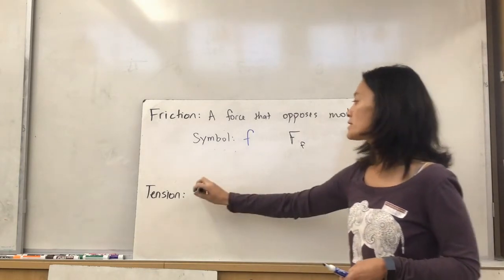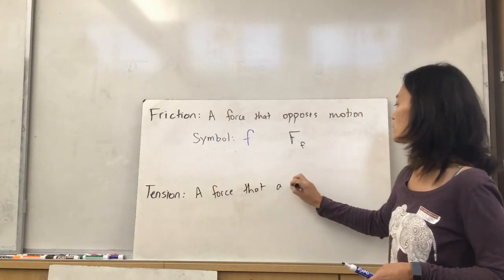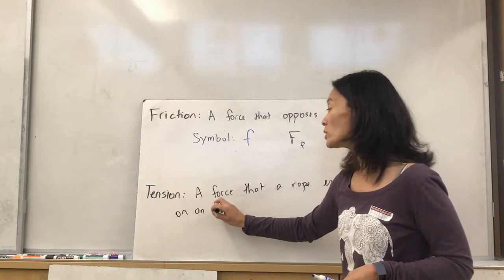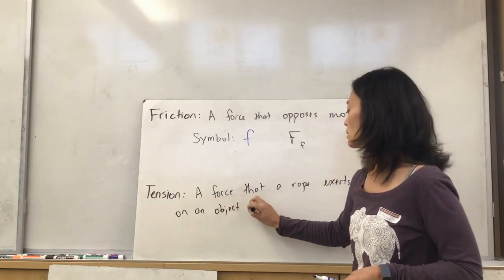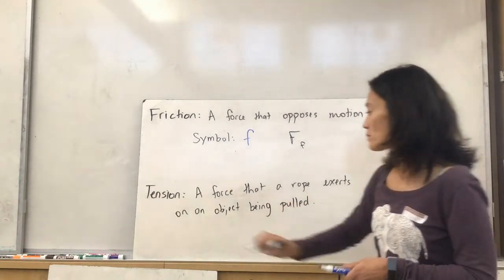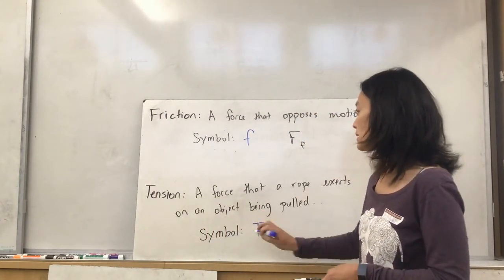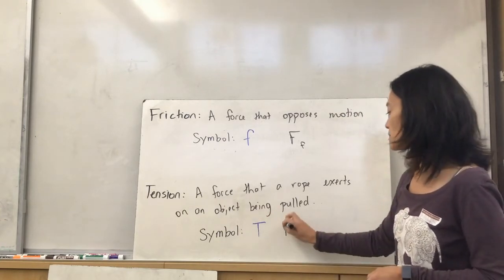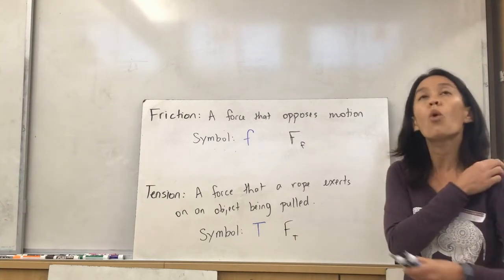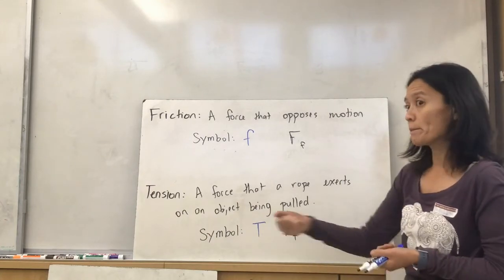Next force is tension. This is a force that a rope exerts on an object being pulled. We symbolize it with a capital T. Again, other textbooks may say F sub T, but we're going to stick with T. There's no equation for tension. It's just something that you will either be told or something you would solve for in a problem. And again, this is when it's being pulled on something.